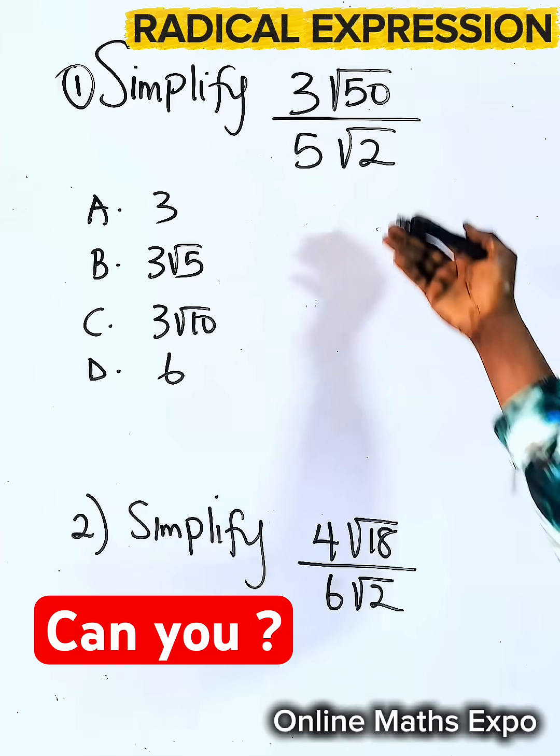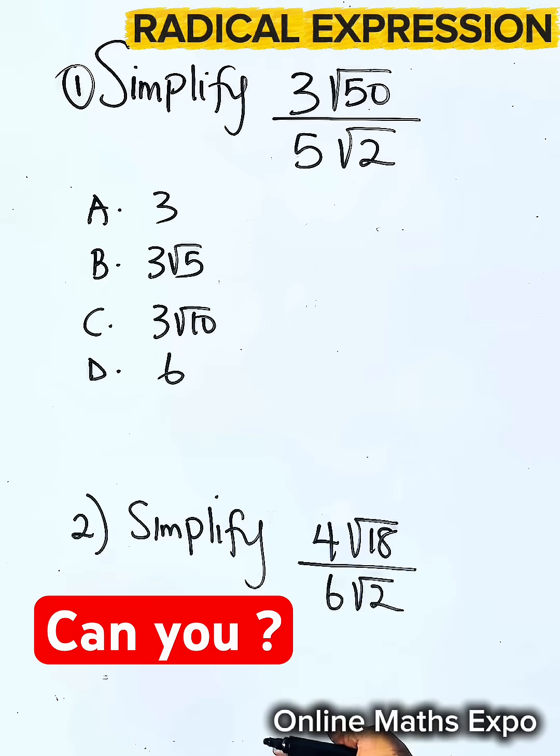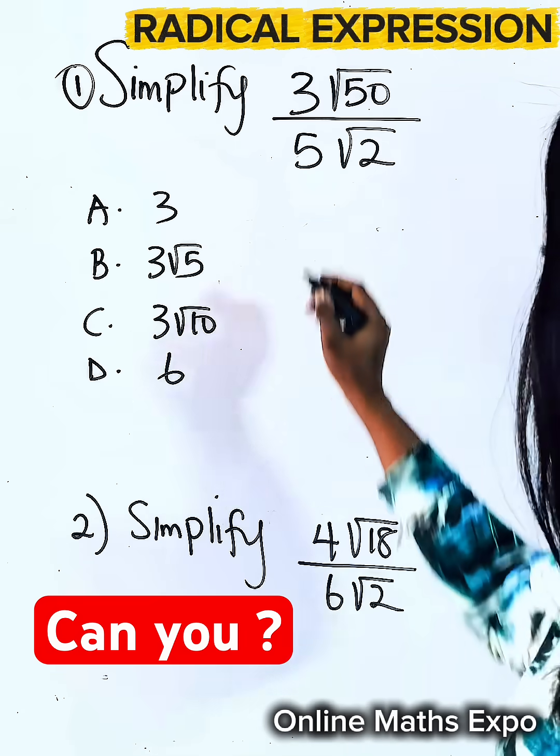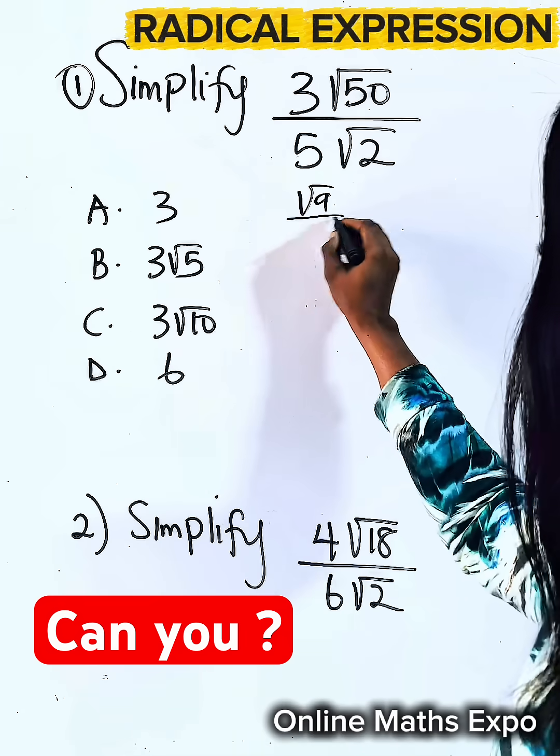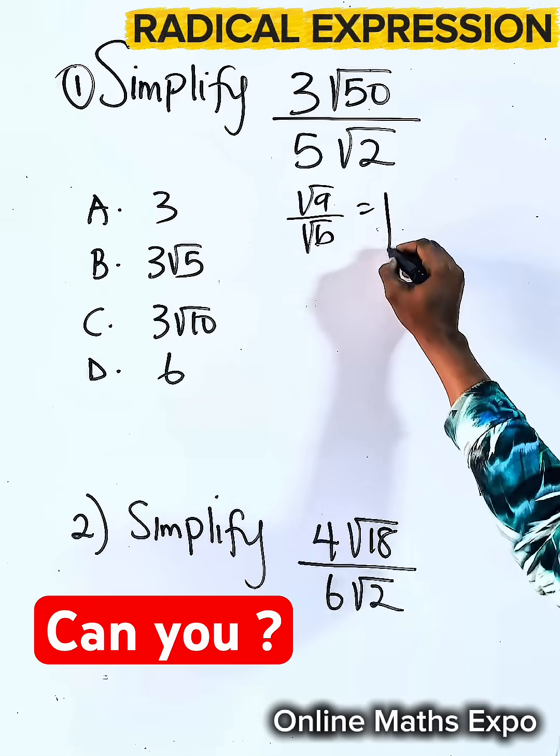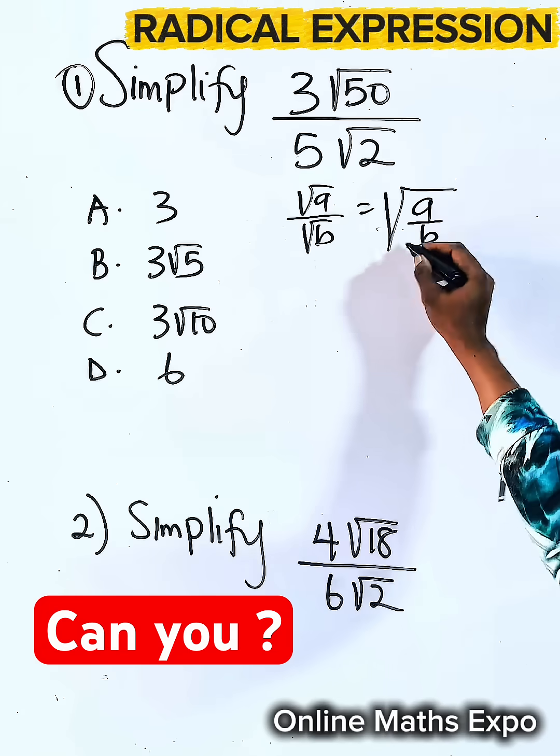To simplify this radical expression, what do you do? Just remember that for every root of a divided by root of b, it is root of a divided by b.